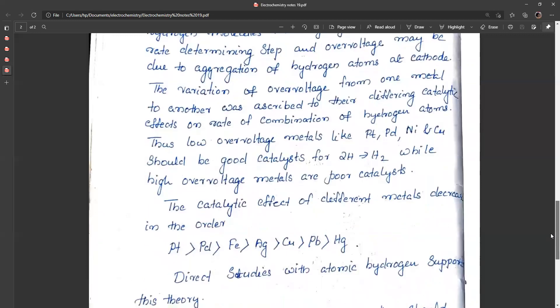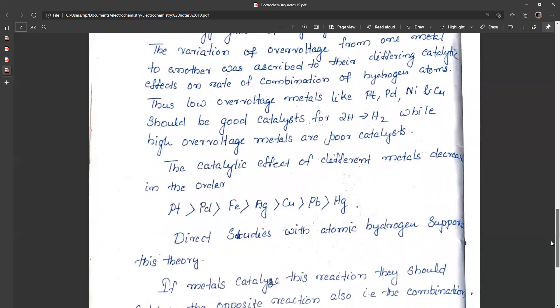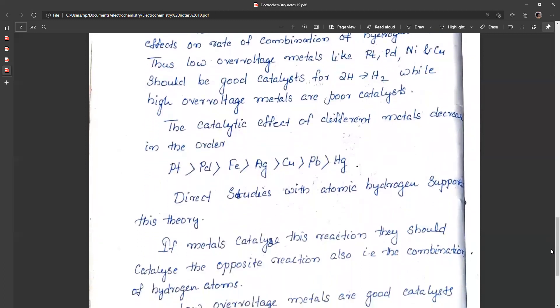The catalytic effect of different metals decreases in the order: platinum, palladium, iron, silver, copper, and lead. Direct studies on atomic hydrogen to form molecules supports this theory. If metals catalyze this reaction, they should catalyze the opposite reaction also, that is, the combination of hydrogen atoms.